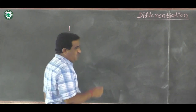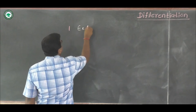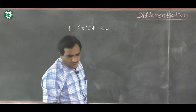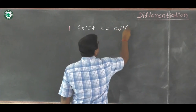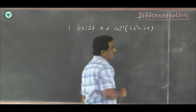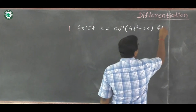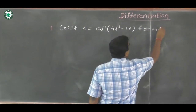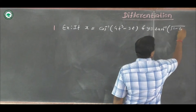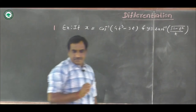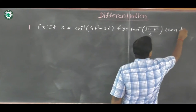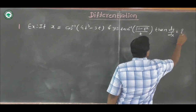The next example is: if x is equal to cos inverse of 4t³ minus 3t, and y is equal to tan inverse of √(1 - t²) upon t, then we have to find dy by dx.